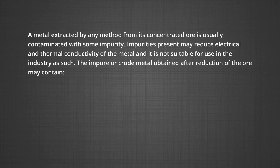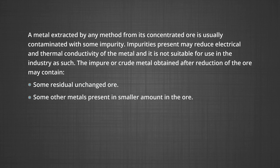The impure or crude metal obtained after reduction of the ore may contain some residual unchanged ore, some other metal present in smaller amount in the ore, residual slag, flux, etcetera left after smelting.